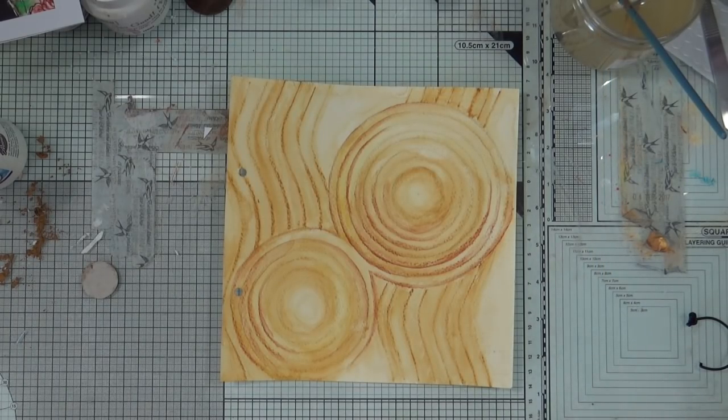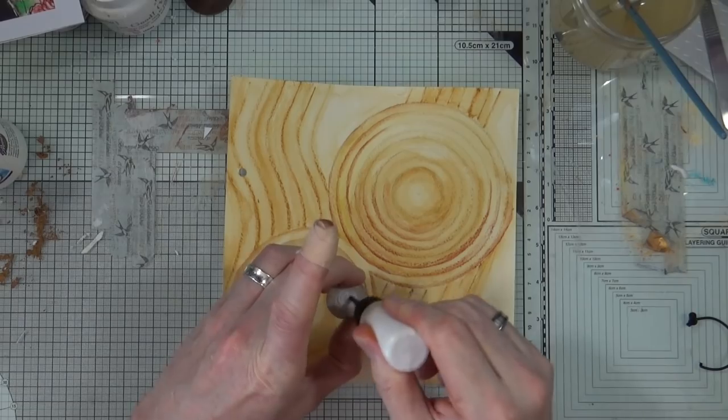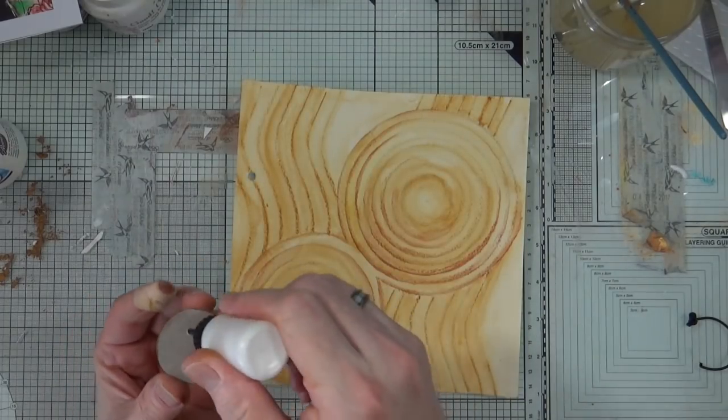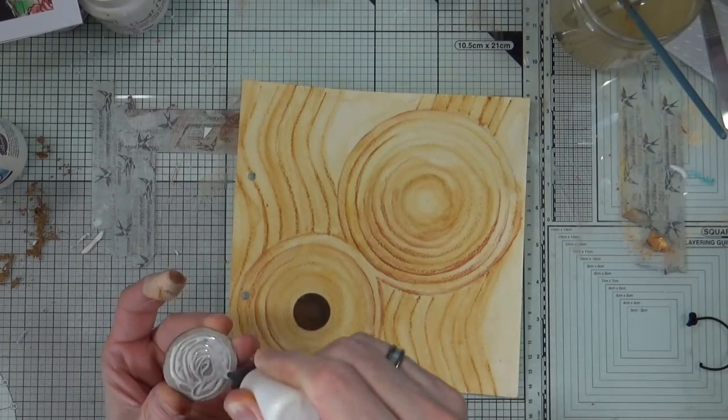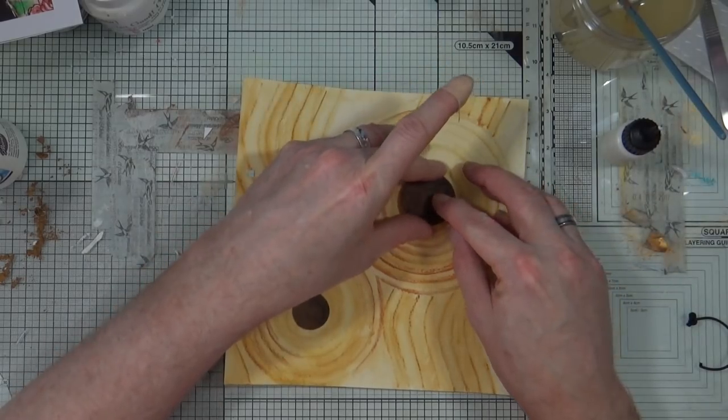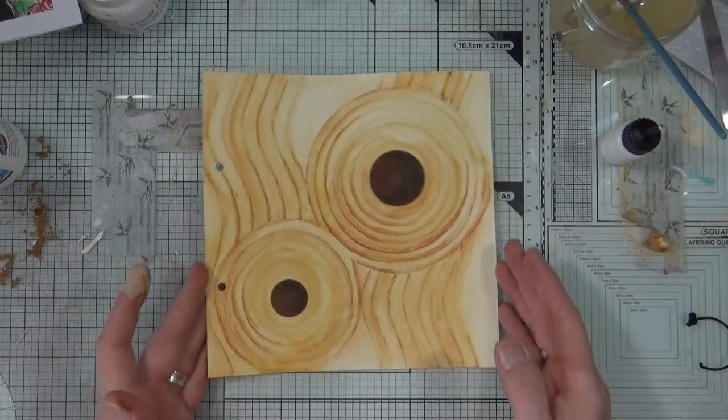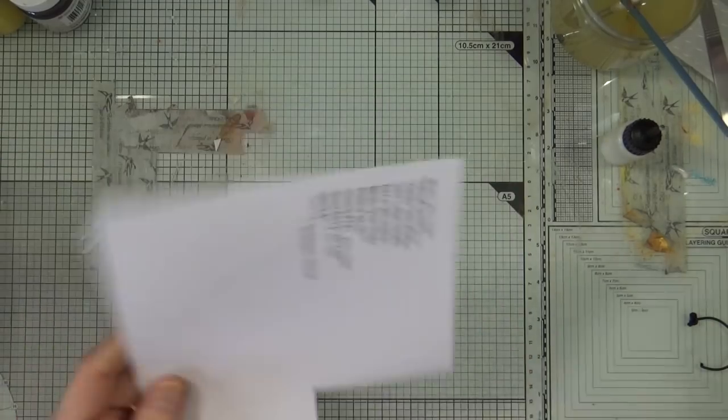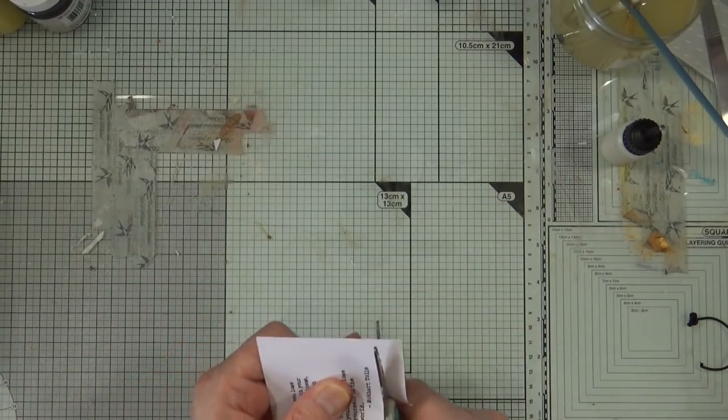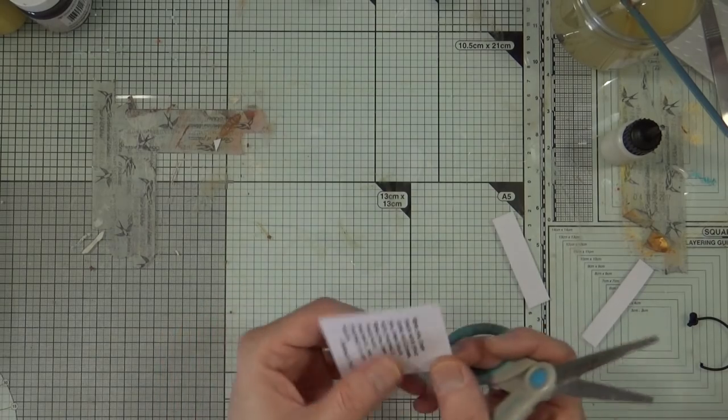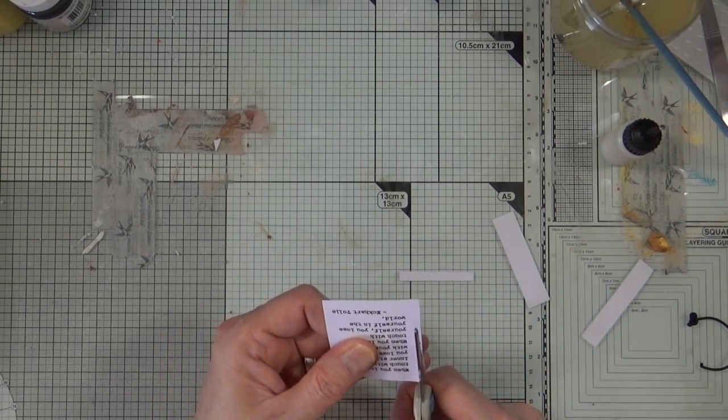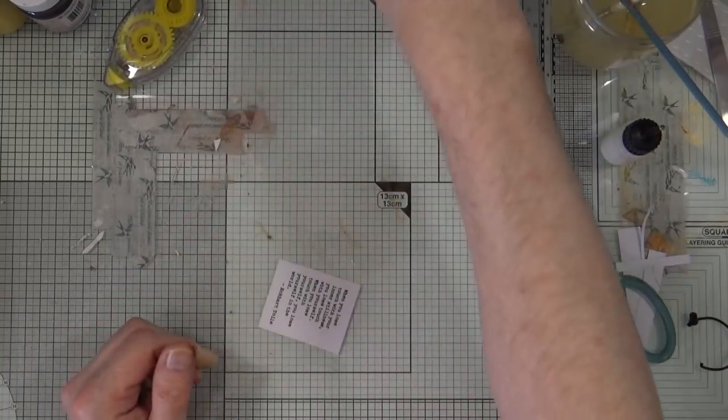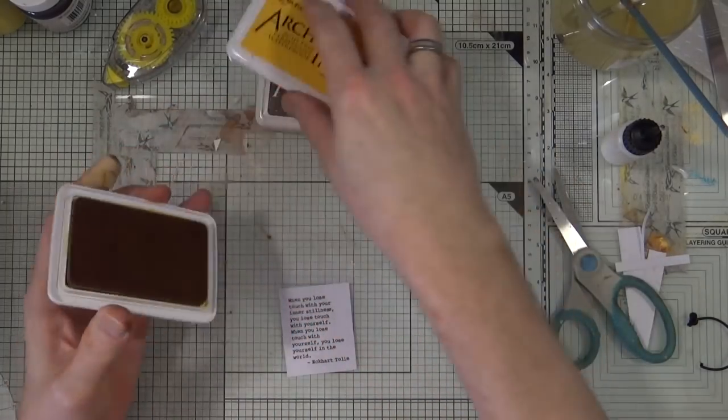Now we're all dry it's time to stick down my rocks or my stones into my zen garden. For that I'm just going to use bog standard PVA craft glue. I'm going to leave them to dry and pop the page to one side while I work on my quote for the page. I've printed it off on my computer using a standard inkjet printer. I'm not going to be covering anything or adding any color over the top of this so I'm not sealing it with chapstick or anything like that.